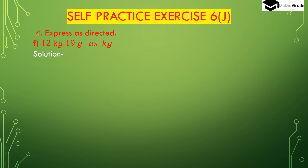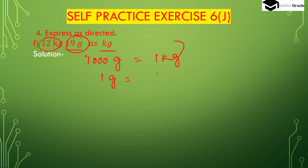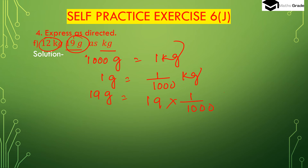Now question f: 12 kg 19 grams to kg. The 12 kg is already in kg units, so no conversion needed. We only convert 19 grams to kg. We know 1000 grams is 1 kg, so 1 gram is 1 divided by 1000 kg. So 19 grams = 19 multiplied by 1 divided by 1000 = 19 divided by 1000 kg. In the denominator 1000 has three zeros so we place three digits after the decimal place.